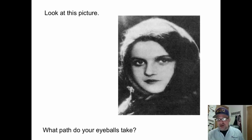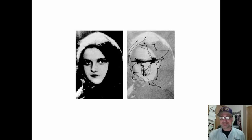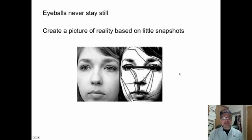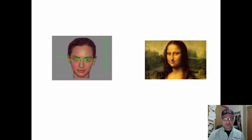Now look at your picture. See where your eyes wander as you look at that. The path they actually do studies on this. This is where the eyeballs kind of wander to make sense of that. It's taking little pictures, little snapshots. The eyes never stay still. We create a picture of reality based on little snapshots. Again, that's how we look.